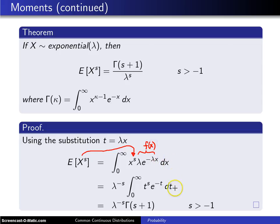Now going from here to here, we have used the substitution t equals lambda x. Keep in mind that also means that dt is equal to lambda dx.